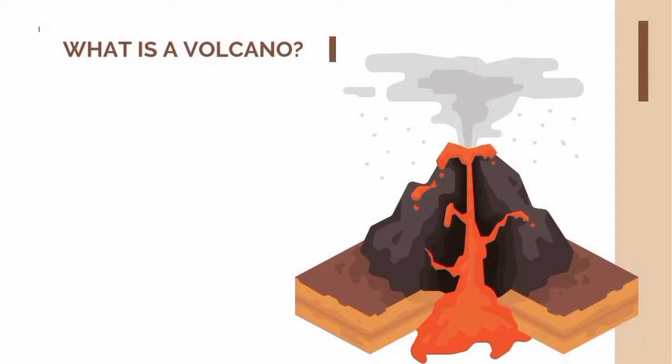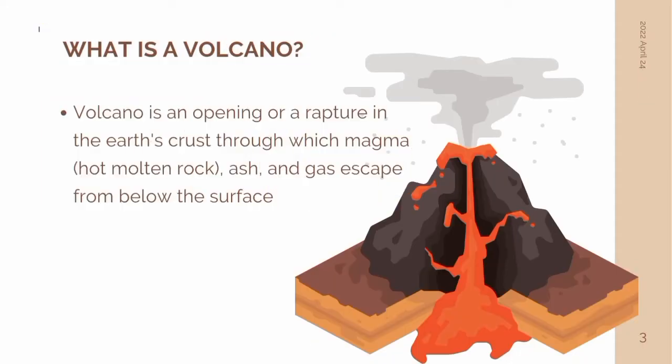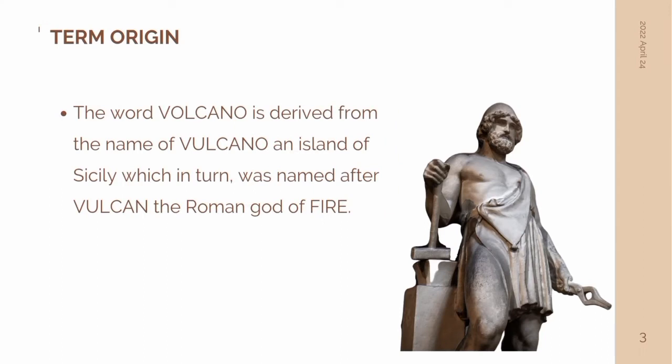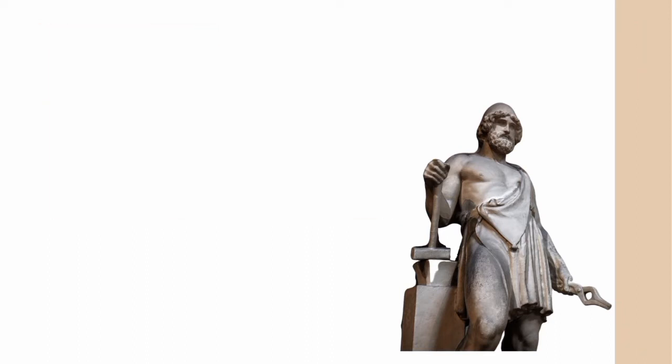I'm sure we already know what a volcano is, but as a review: a volcano is an opening or a rupture in the earth's crust through which magma — a hot molten rock — ash, and gas escape from below the surface. Did you know that the word volcano is derived from the name of Vulcano, an island of Sicily, which in turn was named after Vulcan, the Roman god of fire.